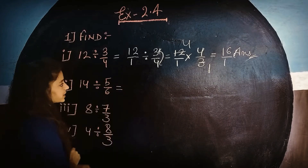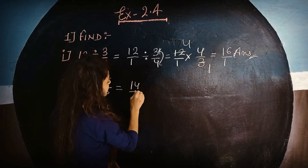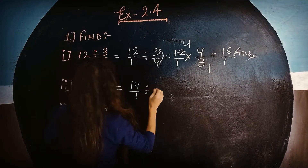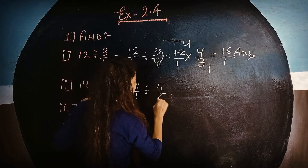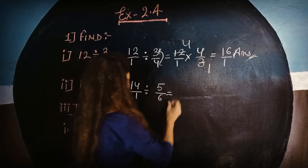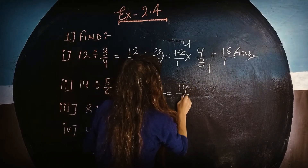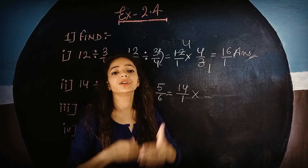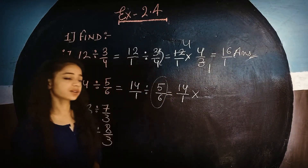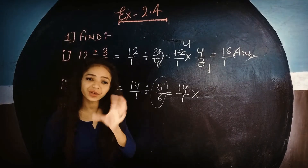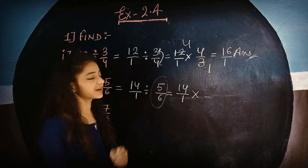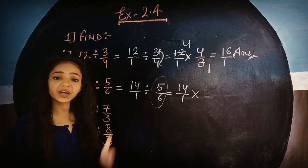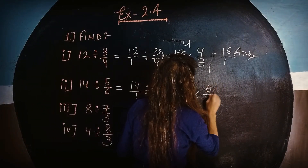Let's come to question number 1, second part. This is again 14, only 14. So we put 1 in the denominator making it 14 upon 1. Then divide by 5 upon 6. We apply the same rule: change divide to multiply and do the reciprocal of the second part, giving us 6 upon 5.